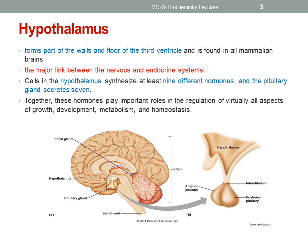It is the major link between the nervous and the endocrine systems, which play a major role in regulating and coordinating the metabolic activities of the body. The cells in the hypothalamus synthesize at least 9 different hormones and the pituitary gland secretes 7. Together, these hormones play important roles in the regulation of virtually all aspects of growth, development, metabolism and homeostasis.